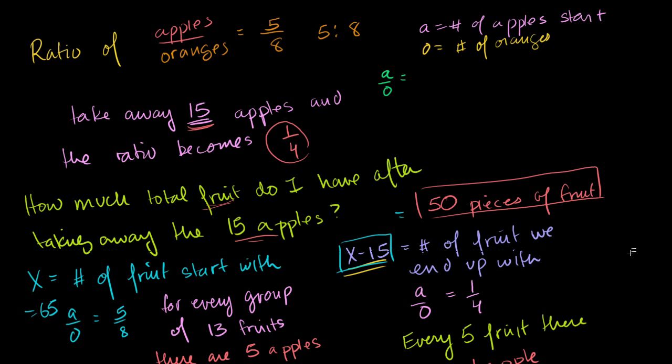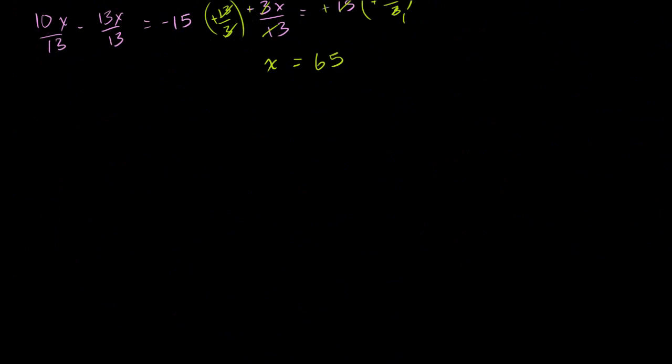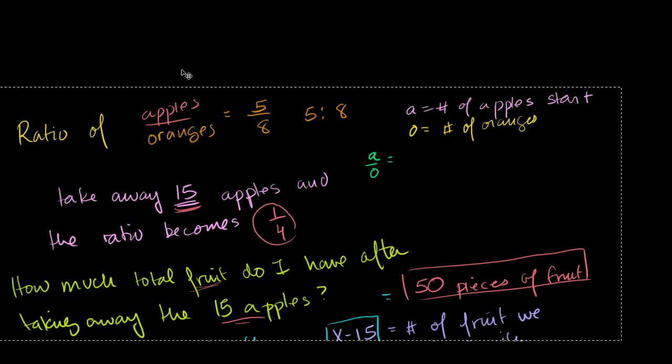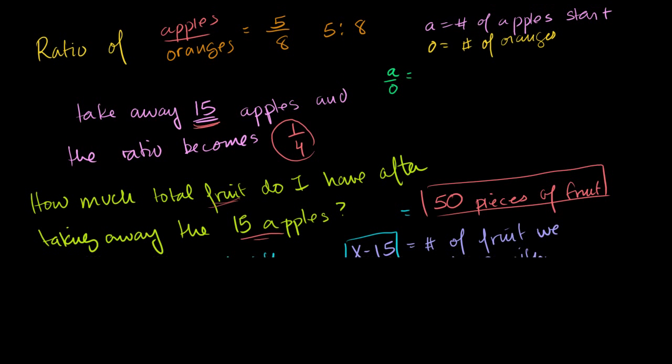let me just copy and paste this part and do it at the bottom part of the screen. Let me copy it. And then let me scroll down here where I have some extra real estate. So I think I'm going to need more than that little pocket of area right there. So I copied and pasted it just like that. So there we have. A is the number of apples to start with, and O is the number of oranges.